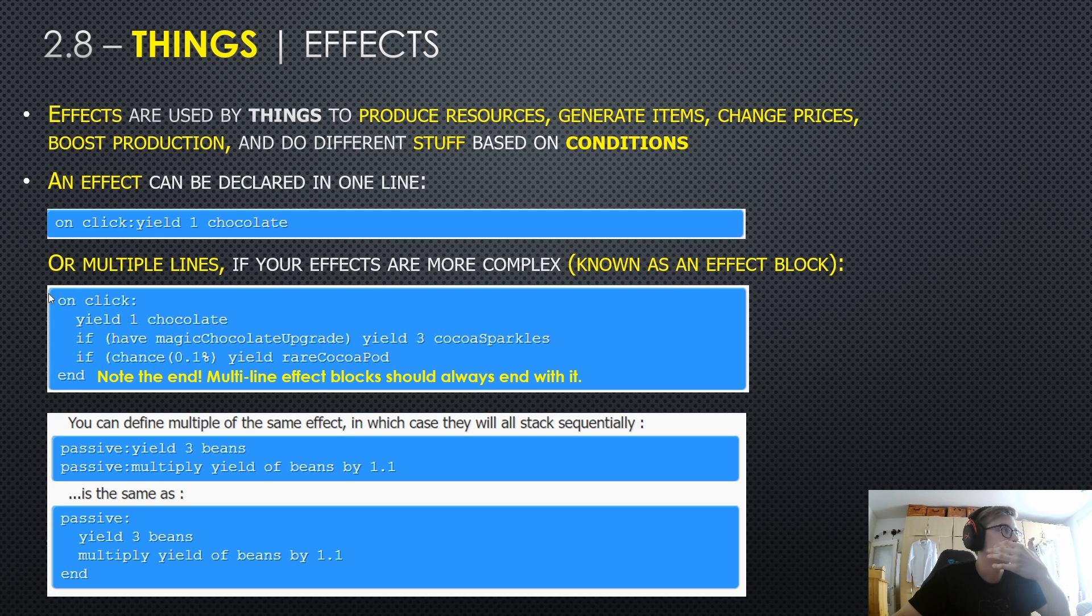And if you have, for example, a magic chocolate upgrade, which you would create in the upgrade section, it would yield you three cocoa sparkles. And there's also a one in one thousand chance to yield some kind of rare resource, so rare cocoa pot, for example. And of course, you must notice this end at the end of the effect block, because multi-line effect blocks should always end with an end.